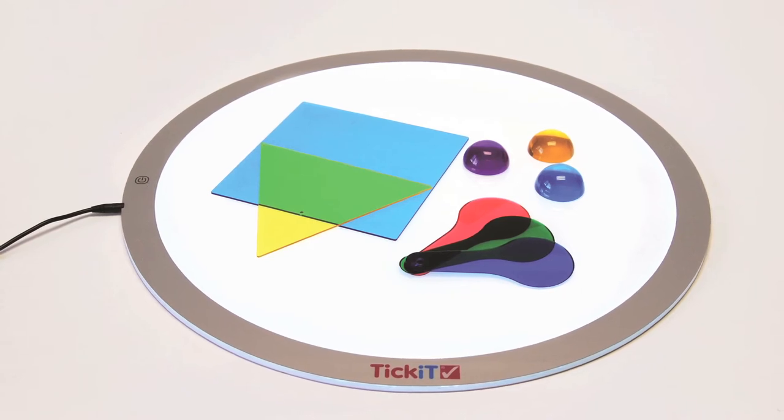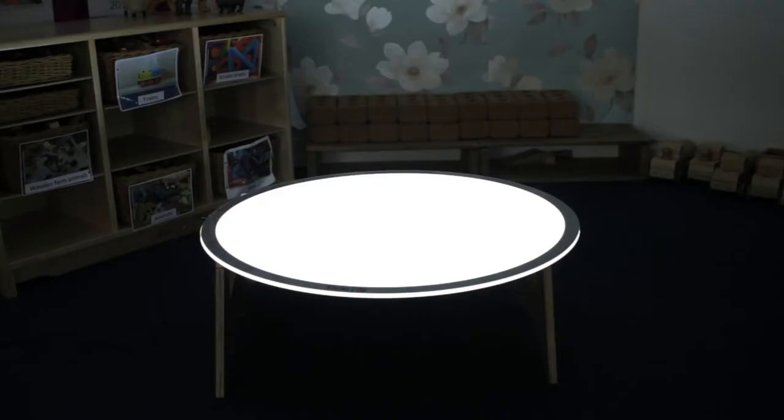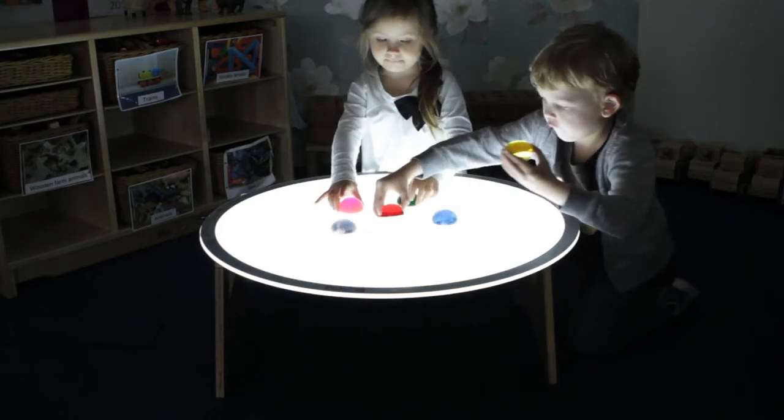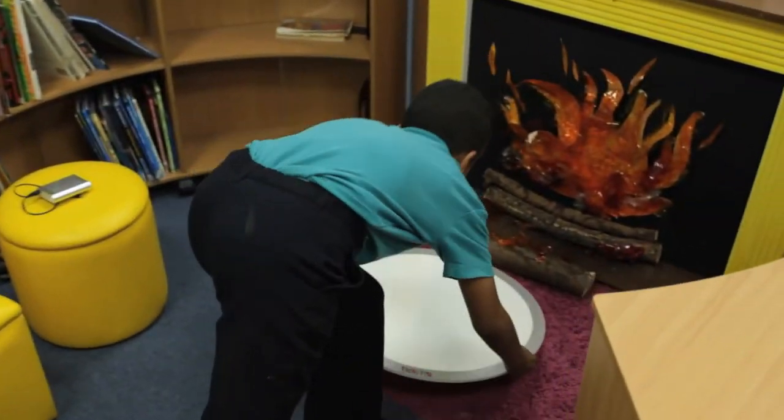Round LED light panels are available in 500mm and 700mm diameters, and provide clear illumination in the classroom. They are portable, lightweight and easy to use.